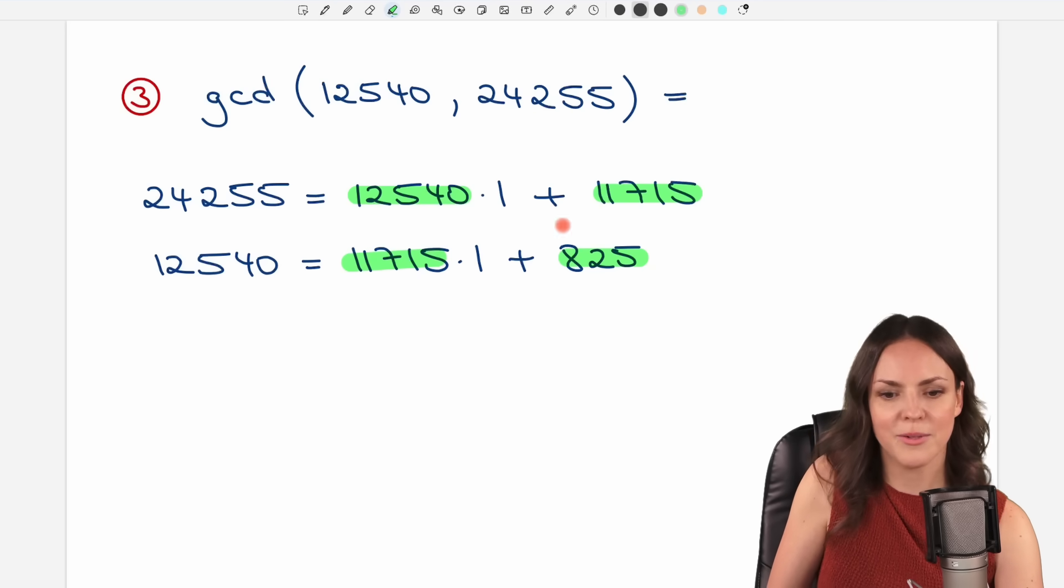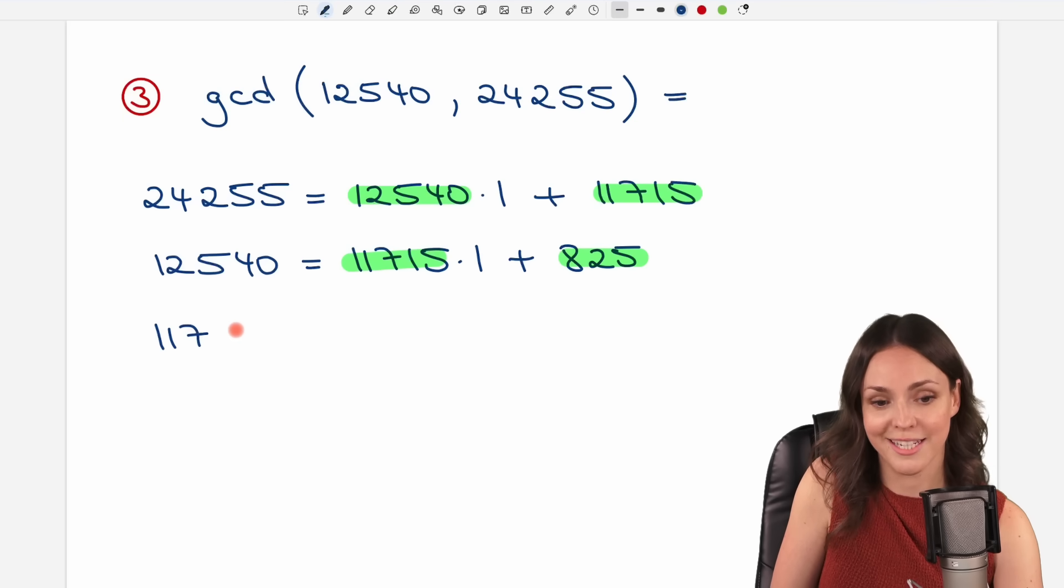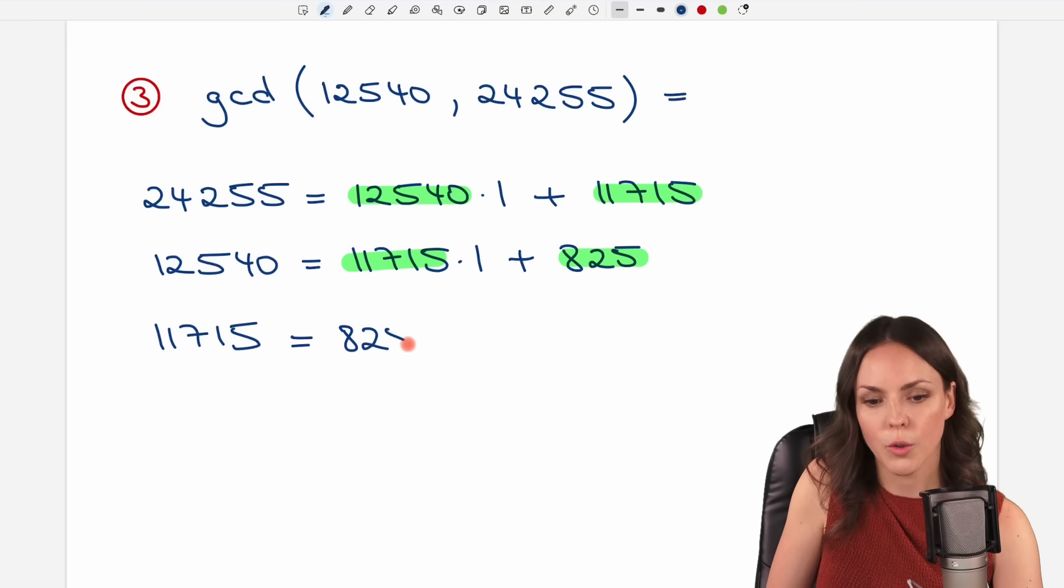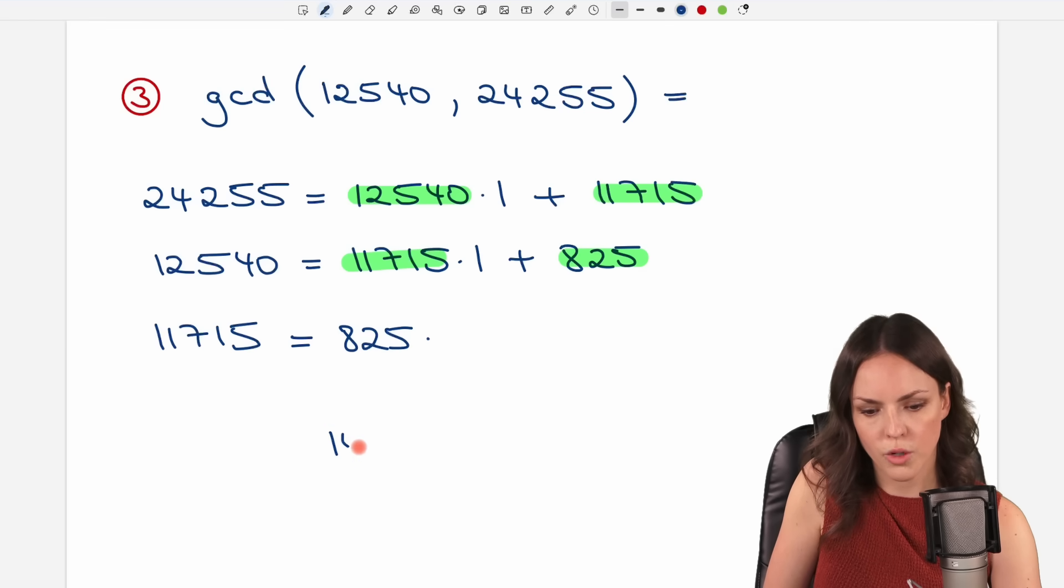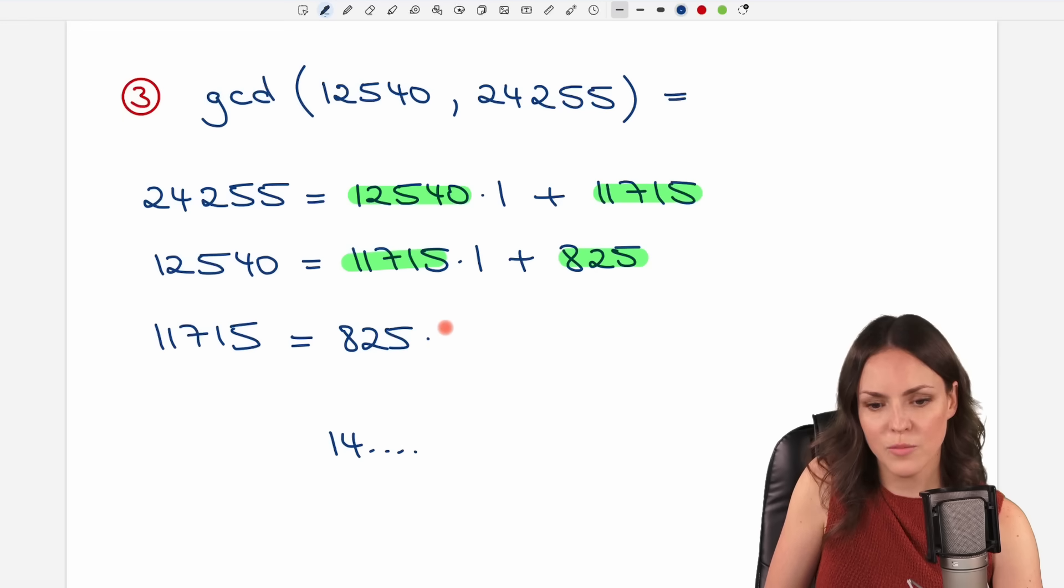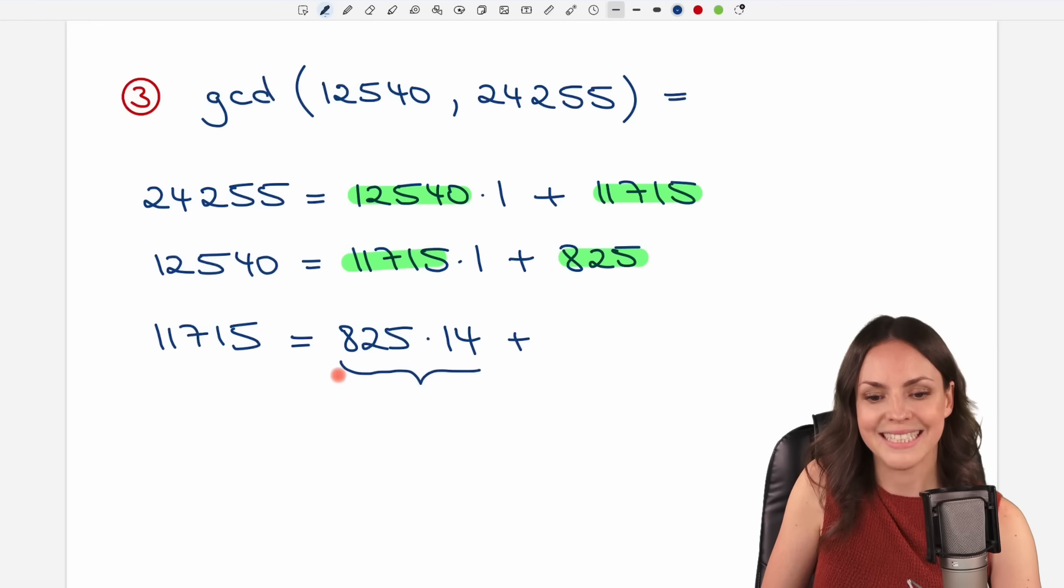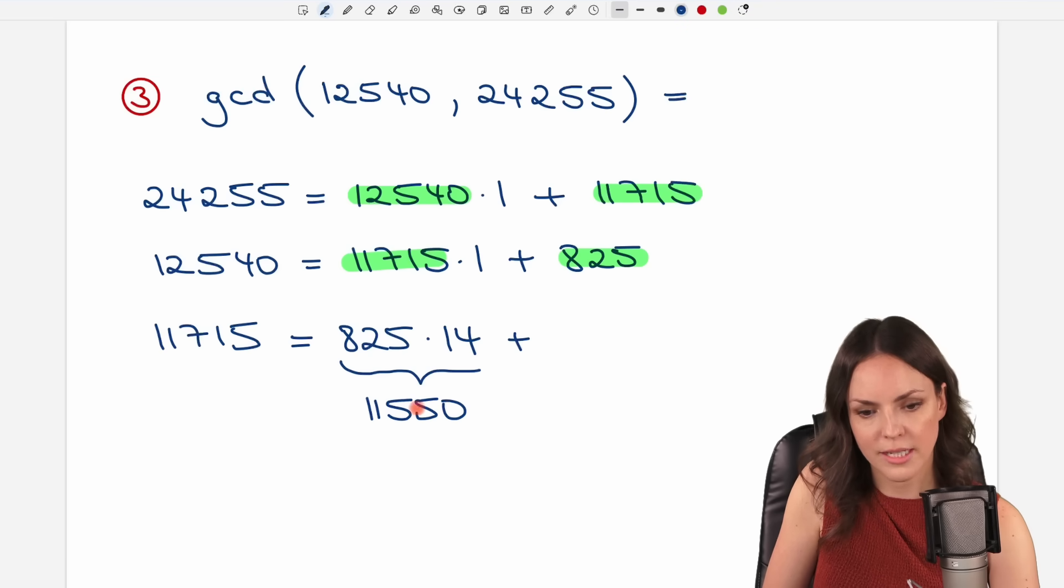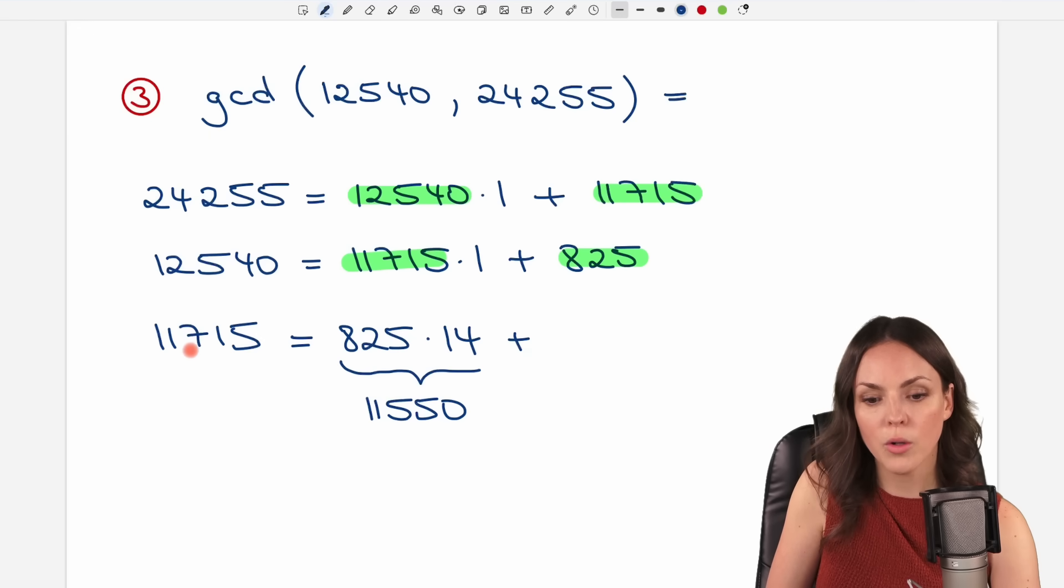Smaller numbers, new numbers, still big, we will get there eventually. Just stay patient. So this number, how often does the 825 go into 11,715? You can use your calculator and divide this number by this number, you will get a result of 14 point something. So we know it goes in there 14 times. So we have times 14. And we find the remainder by calculating 825 times 14 equals 11,550. And from here to here, our goal, it is 165 steps.